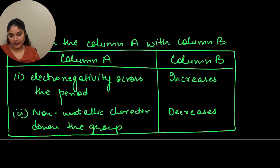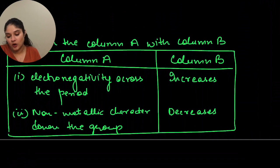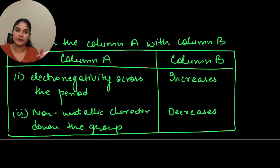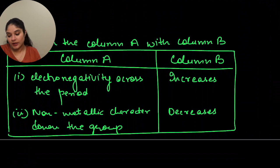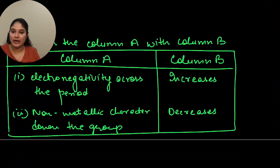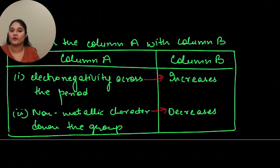Question 15: match column A with column B. Column A says electronegativity across the period — as we go across the period, electronegativity increases. The second says non-metallic character down the group decreases. Their answers are right in front of them.